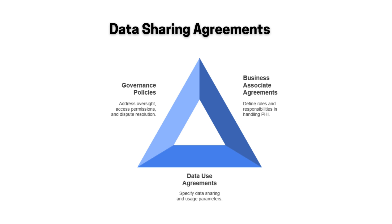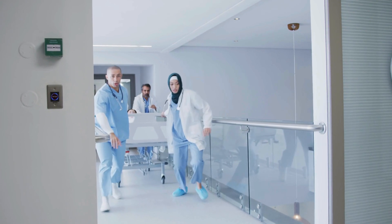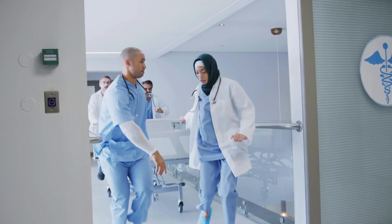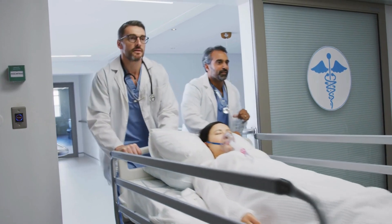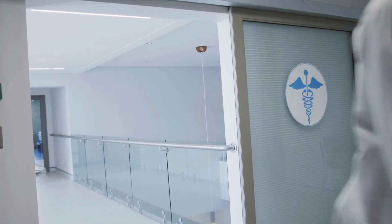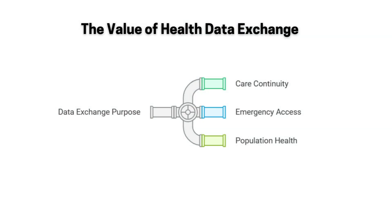We've talked about a lot of technology, standards, and agreements. But why are we doing all this? The point is to improve patient care — to make sure patients are getting the best possible care and that we can make informed decisions about their treatment. Imagine a patient comes into the ER unconscious and we have no idea who they are or what their medical history is. But if we have access to their medical records, we can see their allergies, their medications, any previous conditions — that could be life-saving. And it's not just about emergencies; it's also about transitions of care. If a patient is being discharged from the hospital and going to a skilled nursing facility, we want to make sure that facility has all the information they need to take care of the patient.